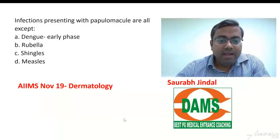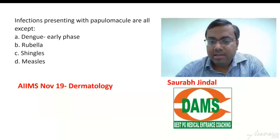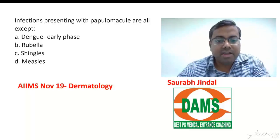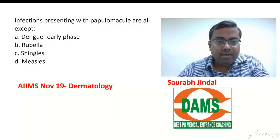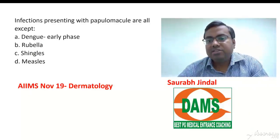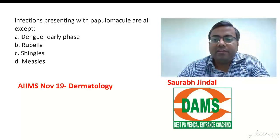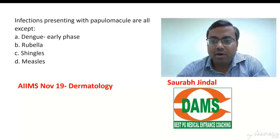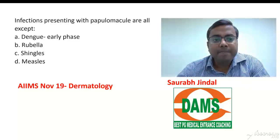Rubella is similarly a flat maculopapular rash. The rubella rash comes very fast and goes away very fast — the entire rash is usually gone in two to three days. It is typically a cephalocaudal rash in rubella, associated with fever.